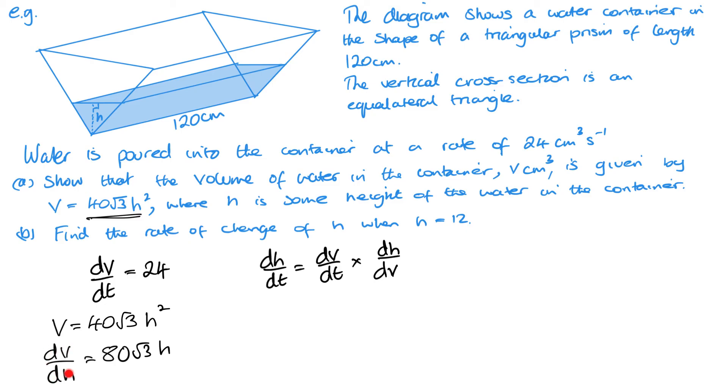Now, we actually want dH over dV, don't we? So we want 1 over this value. So I get 24 times 1 over 80√3 times 12. So that gives me 24 over 960√3. And that, as a final answer, will give me √3 over 120. And since H is a height, it should be obvious that this will then be centimeters per second.